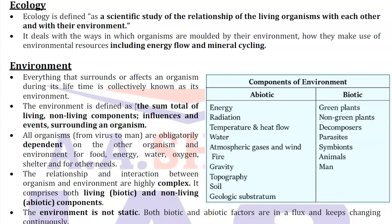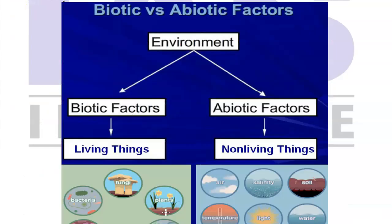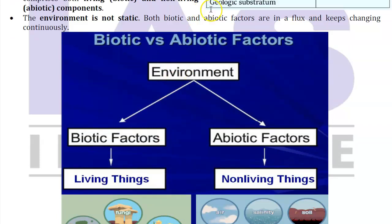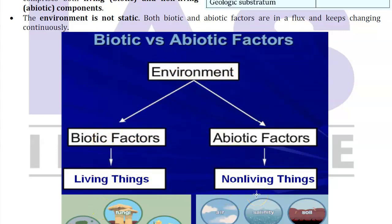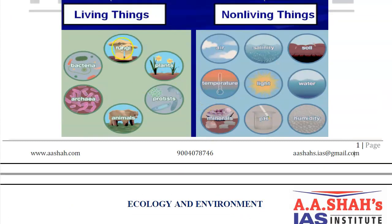The most important statement here is that environment is not static. Both biotic and abiotic factors are in a flux and keep changing continuously. In clear terms, biotic means living things and abiotic means non-living things. Living things include bacteria, animals, plants, and fungi. Non-living things include air, water, soil, salinity, temperature, minerals, humidity, and pH.